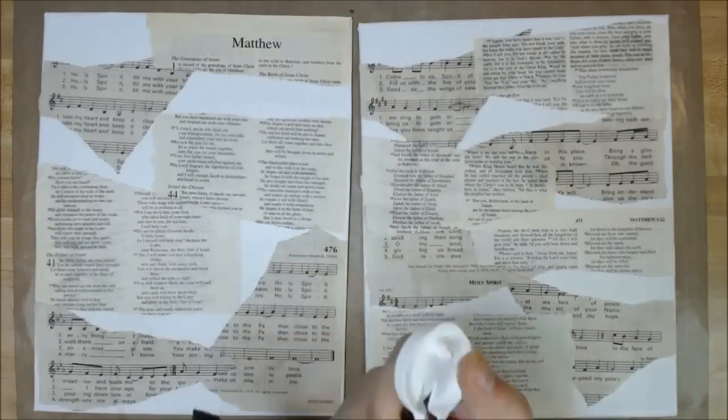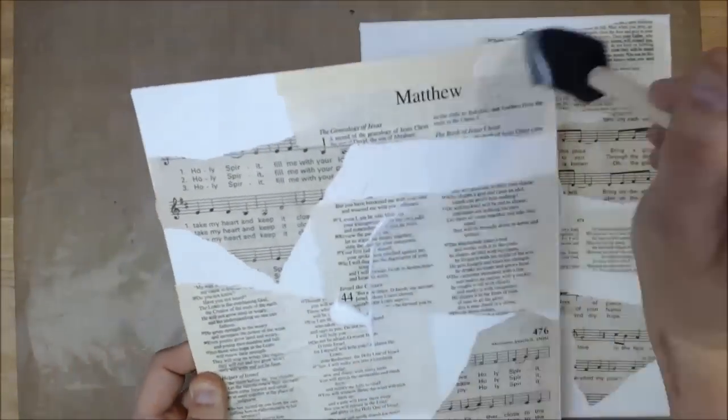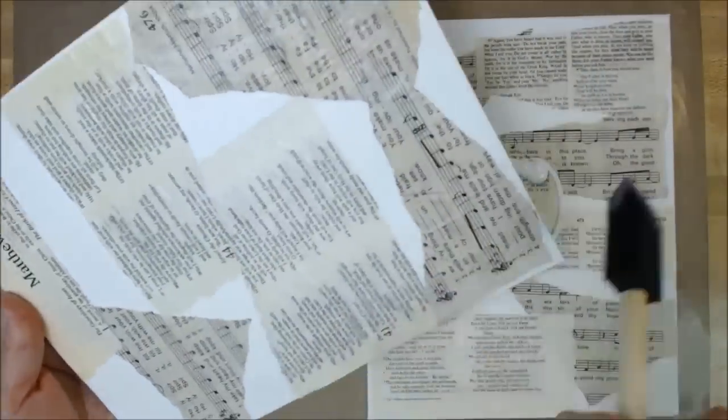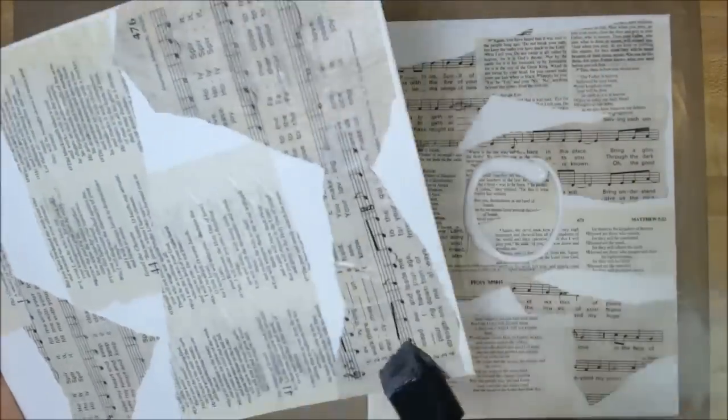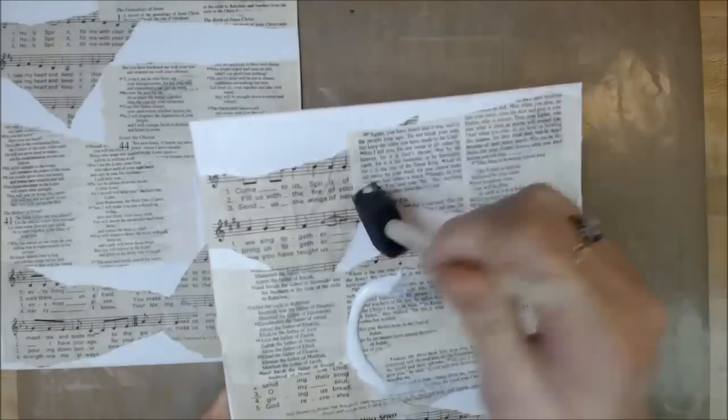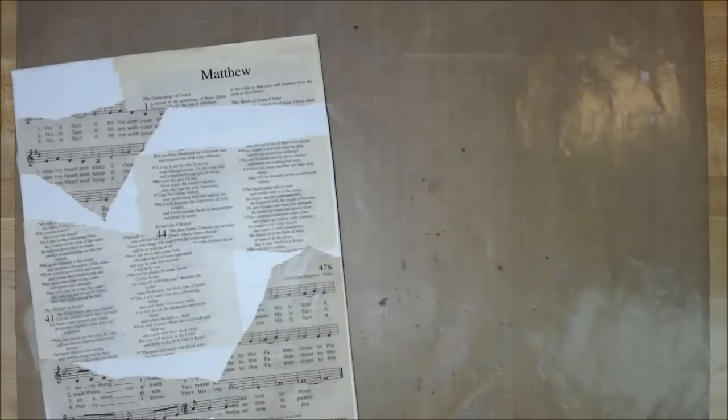And I now am using clear gesso to cover the whole thing because old pages, and especially cheap old pages, have differences to them. And so I didn't want to add color and have the color absorb differently into the different papers. So at this point I put clear gesso on. Now I intended to use clear gesso one and maybe two more times throughout this project, but I forgot.